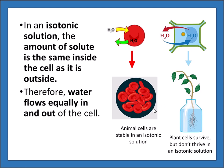Plant cells will survive in an isotonic solution but won't thrive, because they want the vacuole to be as full of water as possible. When the vacuole is full of water it pushes on the cell wall and helps the plant stand upright, so isotonic is not ideal for a plant.